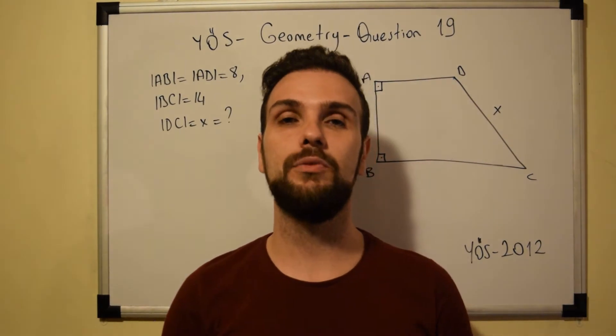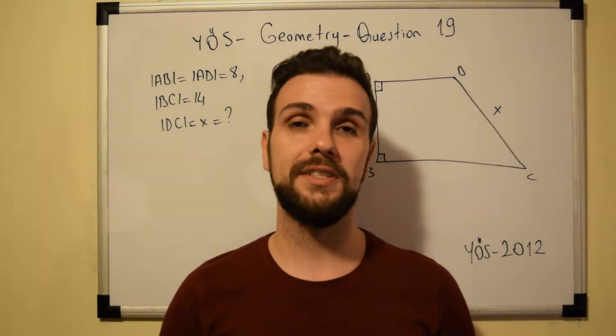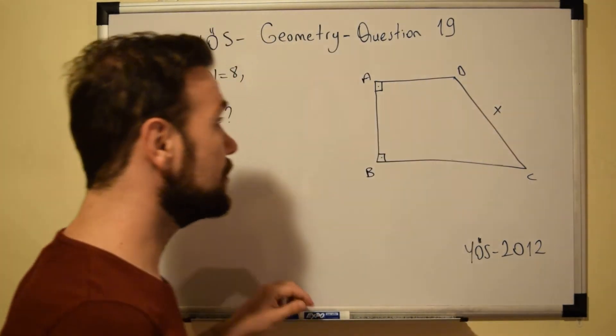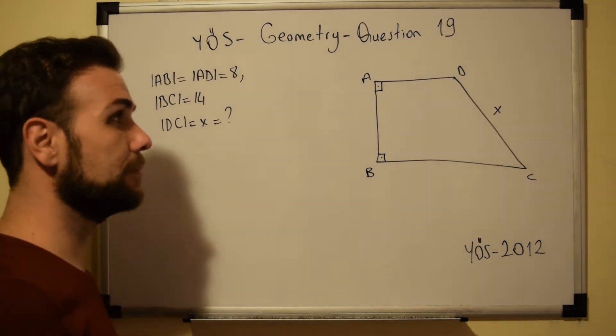Greetings everyone and welcome to question number 19 of the US examination geometry section. In this question, as you can see, we are dealing with a trapezoid.